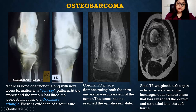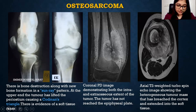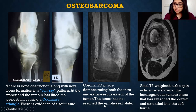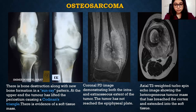Osteosarcoma: there was bone destruction along with new bone formation in a sunburst pattern at the upper end of the tumor, and lifting of the periosteum caused Codman's triangle. Coronal PD and axial T2 images showed the tumor had both intramedullary and extraosseous extent, and had not reached the epiphyseal plate. The second axial T2-weighted image showed a heterogeneous tumor mass that had reached the cortex and extended into the soft tissue component.